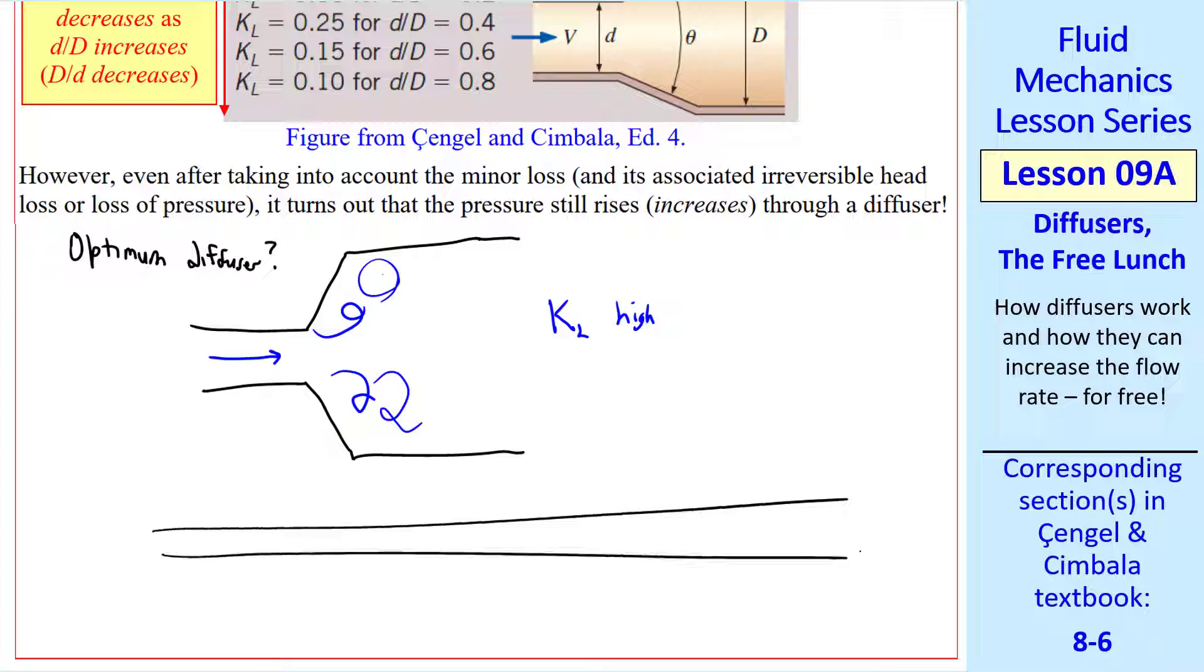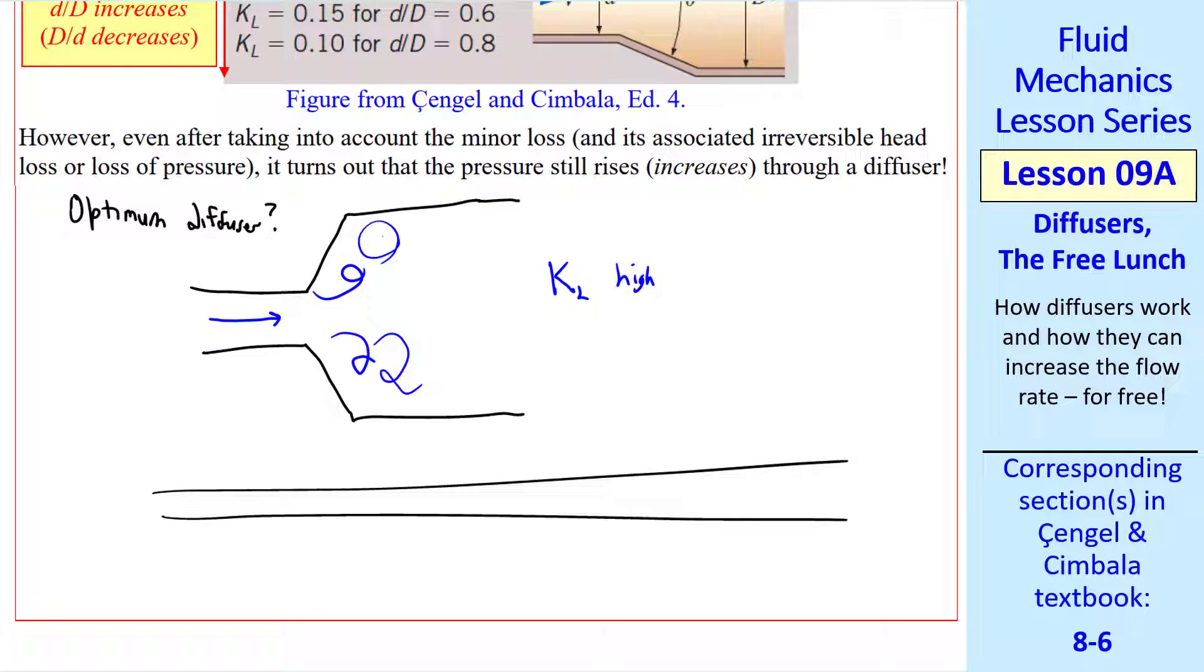On the other hand, if you have a very shallow angle and a long diffuser, friction at the wall will start to affect the KL. So KL will again be high.